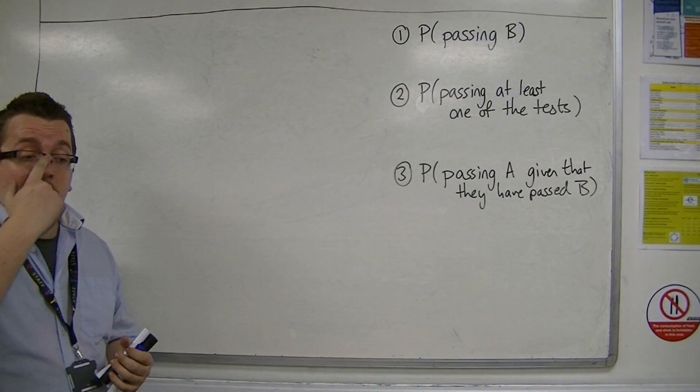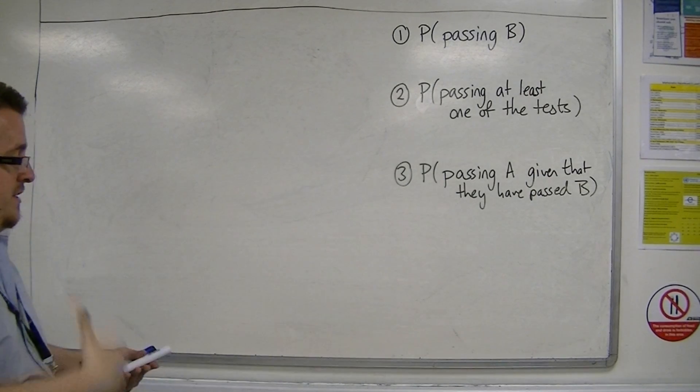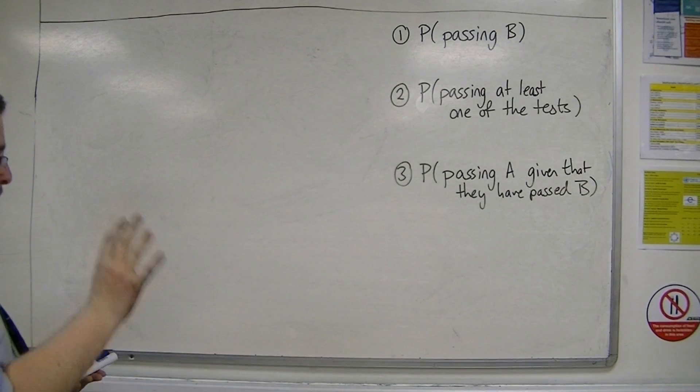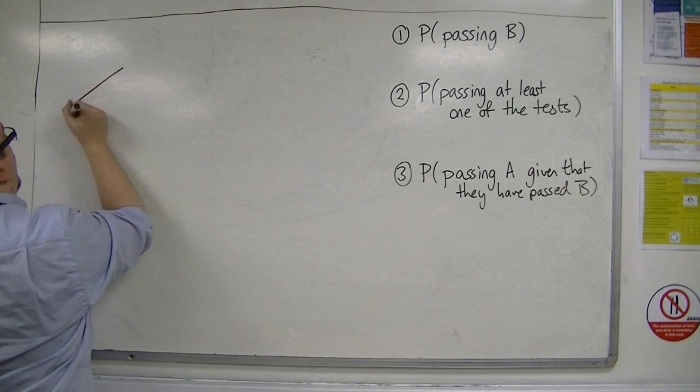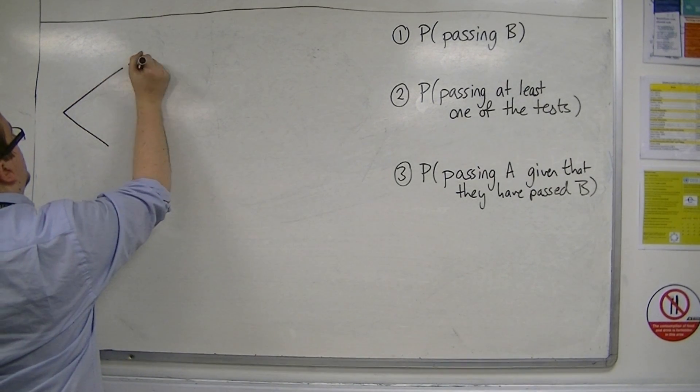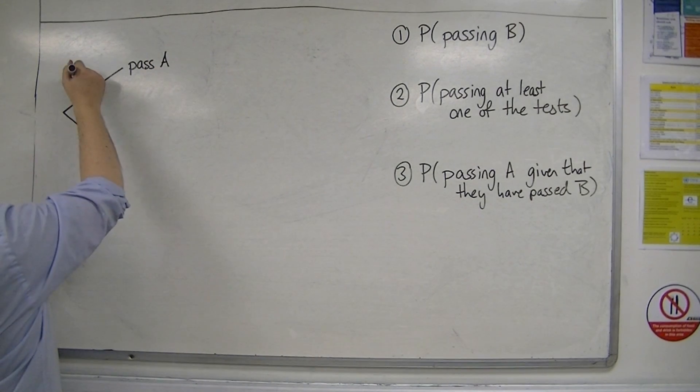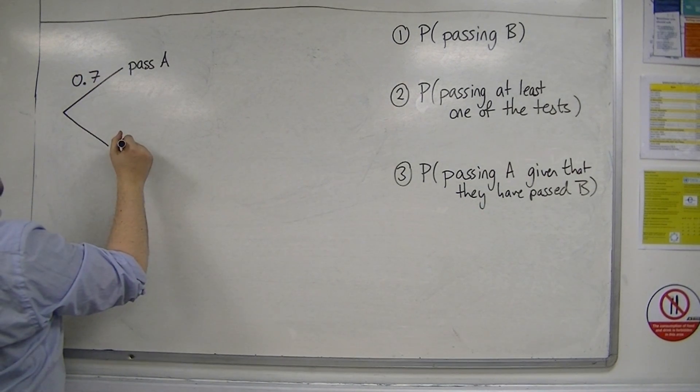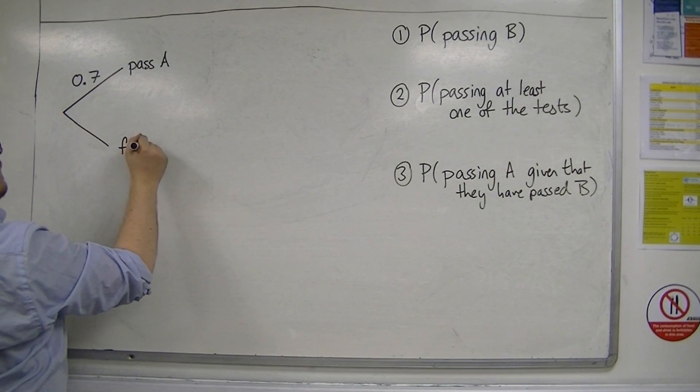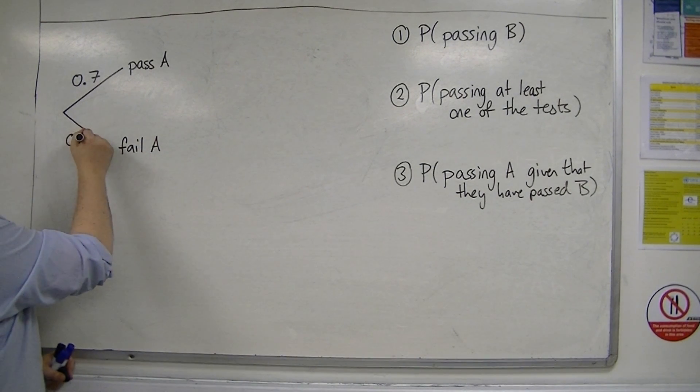Let's say there are two tests. A person is going to take test A and test B. The probability of passing test A is 0.7, so the probability of failing A is 0.3, because you either pass or fail.